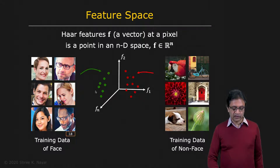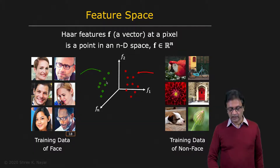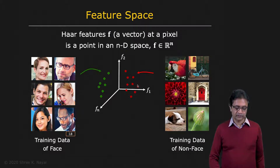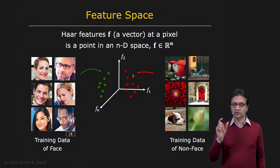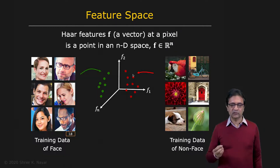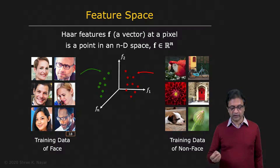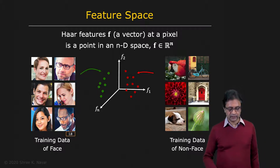The points on the left — the green points — are points that correspond to faces, examples of faces. That's training data corresponding to faces. The red points correspond to non-faces. Given a new feature vector, that is a novel window, we simply want to classify it as being a face or not a face, given this training data.